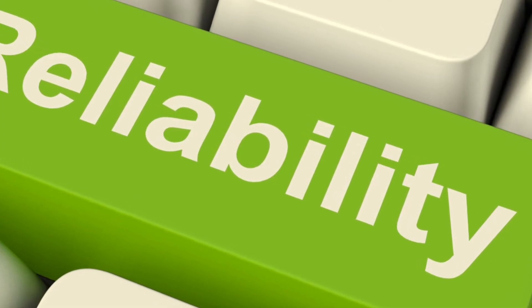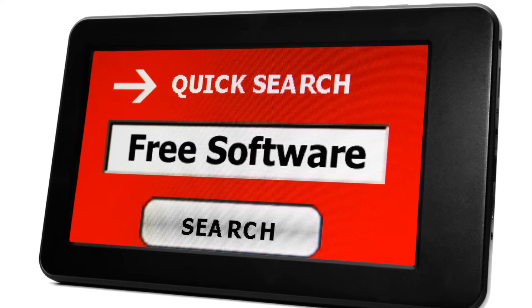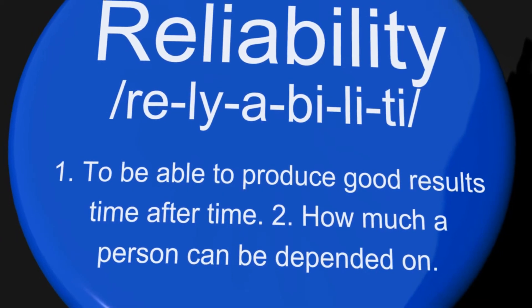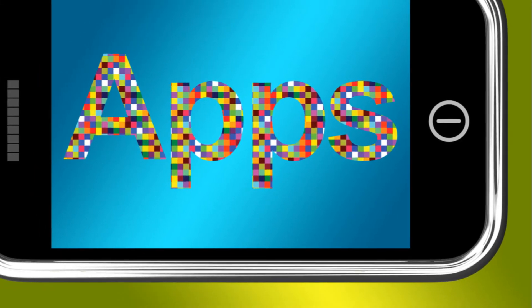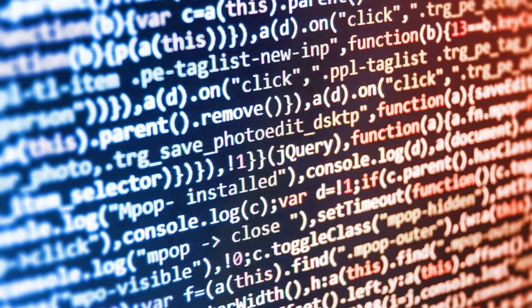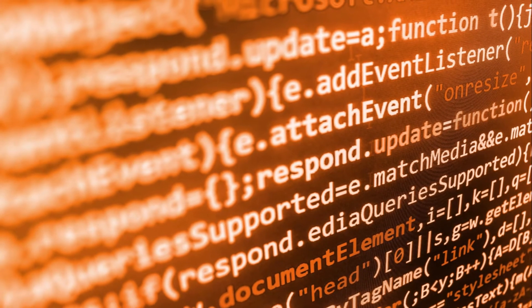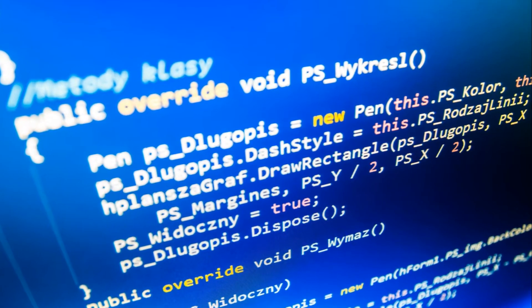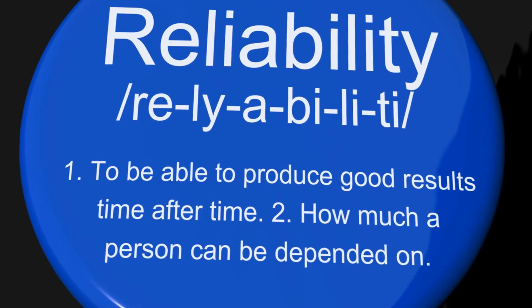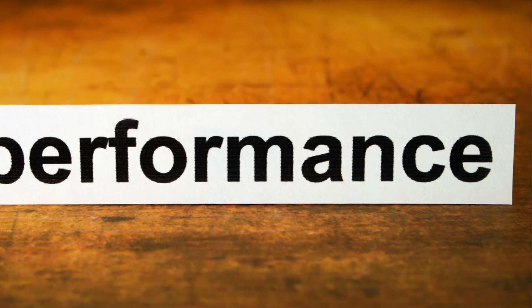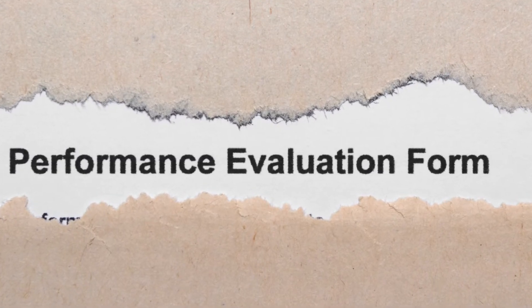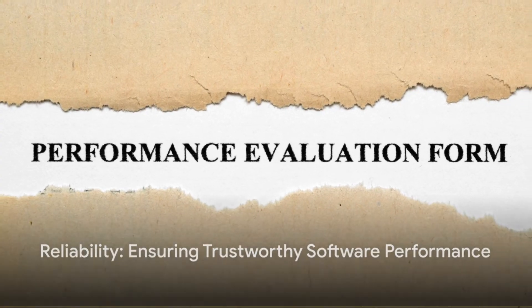First up is maturity — not about the age of the software, but how stable it is. A mature software has been tested thoroughly and has had most of its bugs ironed out. Next, availability is about how often the software is up and running, ready to perform its function. Thirdly, fault tolerance is the software's ability to continue functioning even when things go wrong — like a tightrope walker who keeps balance even when the wind blows. Lastly, recoverability refers to the software's ability to recover from a failure and regain functionality, like a boxer who gets knocked down but keeps fighting. In a nutshell, reliability is about delivering consistent performance regardless of circumstances, ensuring users can trust the software to function as expected every single time.